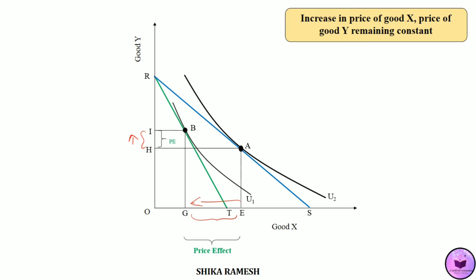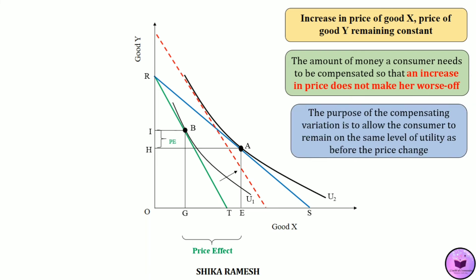Since the consumer is in a worse off situation, using compensating variation of income, the consumer's reduced real income is adjusted so that the consumer remains on the initial level of utility U2. To do that, we draw a budget line parallel to RT and also tangent to the initial utility level U2, represented by the red dotted budget line. The consumer reaches equilibrium with this new budget line at point C.